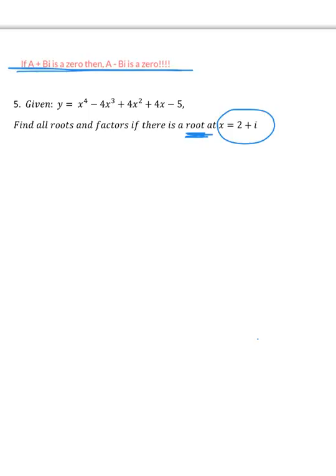So with this, if 2 plus i is a zero, then they're kind of indirectly telling us that its conjugate 2 minus i also has to be a zero. Because think of it, if you get a negative and a square root when you use quadratic formula, you always have the negative b plus or minus the square root of b squared minus 4ac.